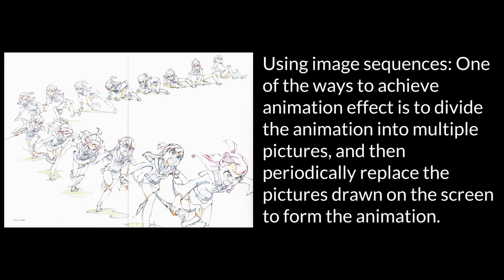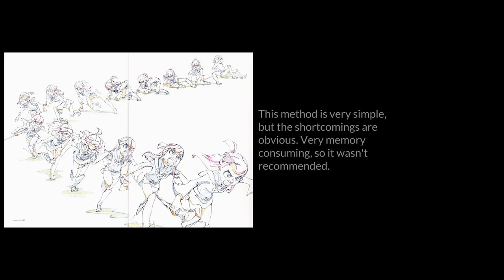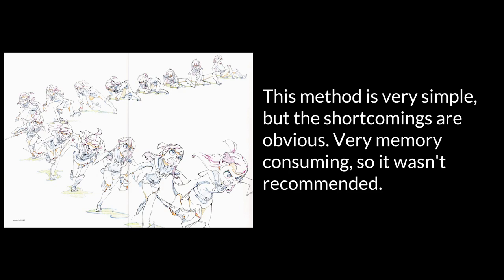Using Image Sequences: one of the ways to achieve an animation effect is to divide the animation into multiple pictures, and then periodically replace the pictures drawn on the screen to form the animation. This method is very simple, but the shortcomings are obvious — it is very memory consuming, so it wasn't recommended.